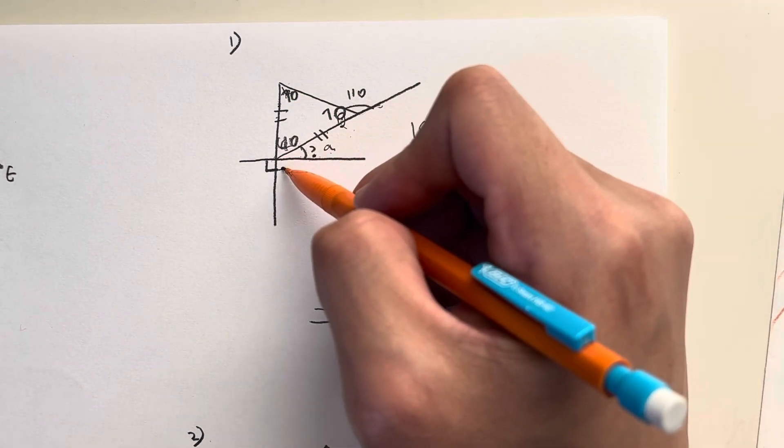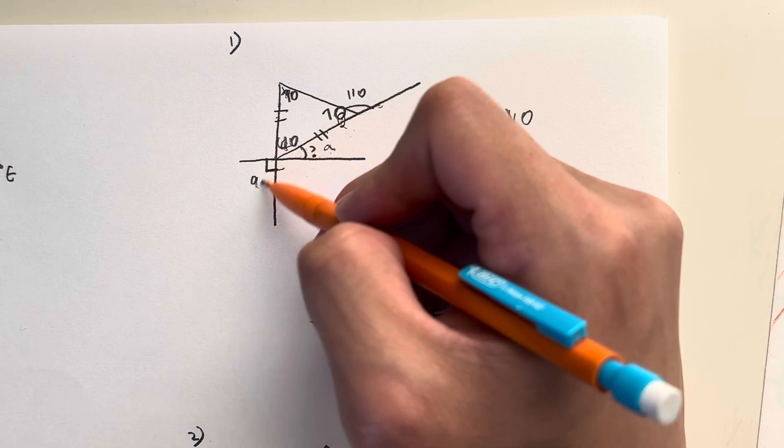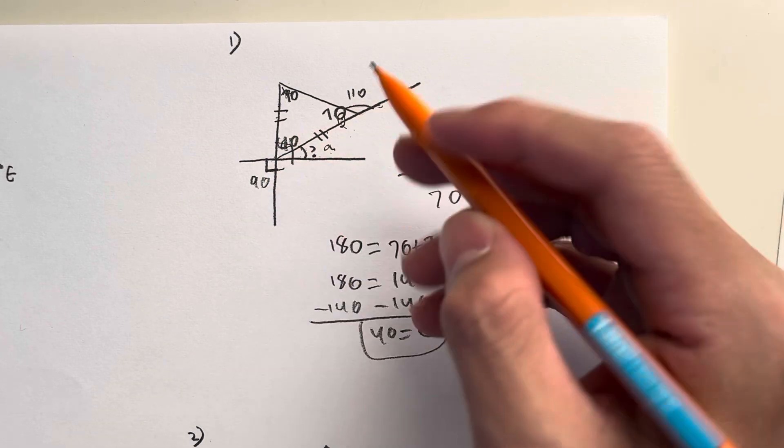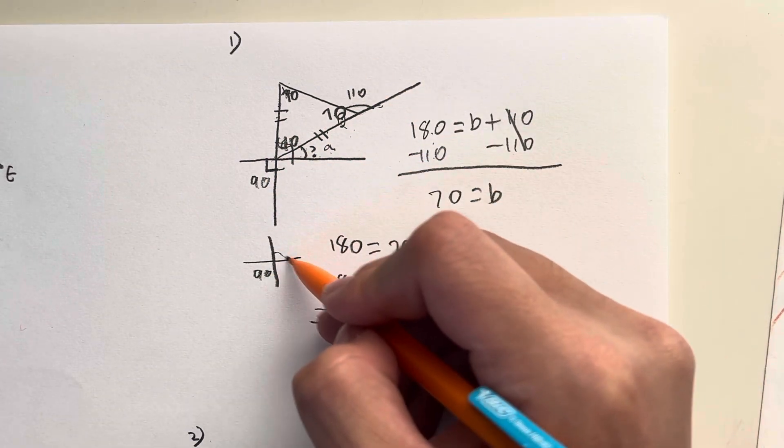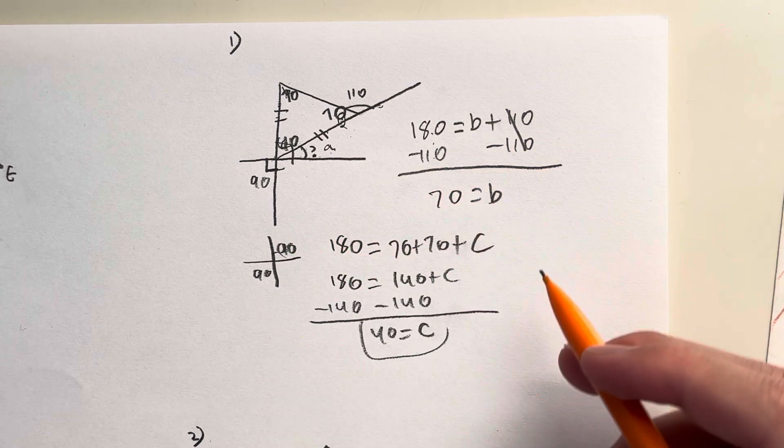I see that this forms a 90 degree angle as marked right here. And that also means that because the two lines intersect, because this one's 90 the vertical angles are equal so this one's also 90.